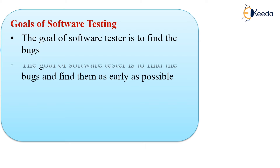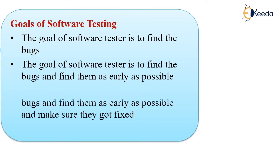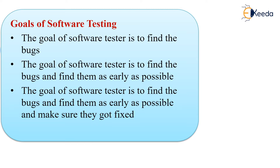The goal of software testing is to find the bug. The second goal is to find them as early as possible. The third goal is to find out the bugs as early as possible and make sure that they got fixed.